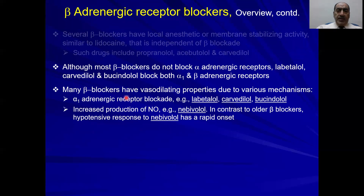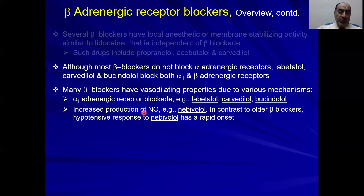Some beta blockers have vasodilating properties that add to their antihypertensive effect by two mechanisms: first, by inhibition of alpha receptors causing vasodilation; and second, by increasing the production of nitric oxide. Nitric oxide activates guanylate cyclase, converting GTP into cyclic GMP, which activates protein kinase G causing vasodilation. That is why labetalol has a very rapid effect.